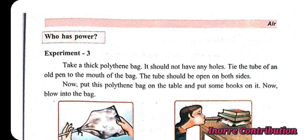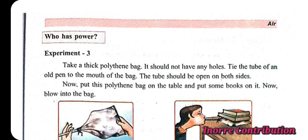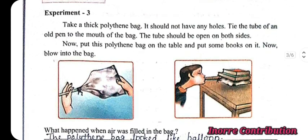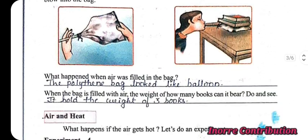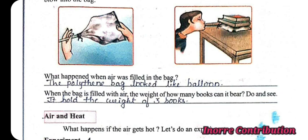Experiment 3: Take a thick polythene bag with no holes. Tie the tube of an old pen to the mouth of the bag — the tube should be open on both sides. Put the polythene bag on the table and put some books on it. Now blow into the bag. When air is filled in the bag, the polythene bag looks like a balloon.